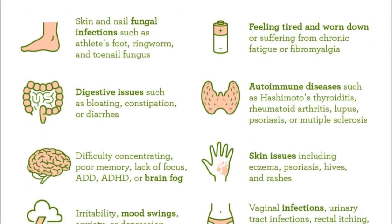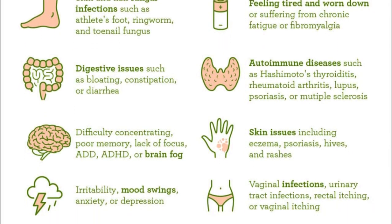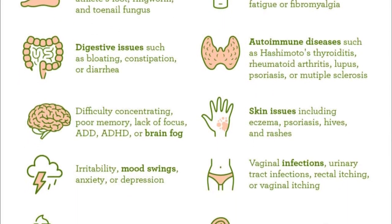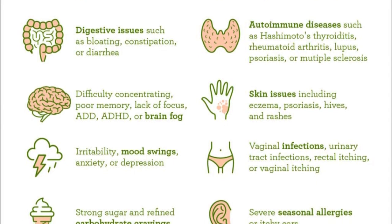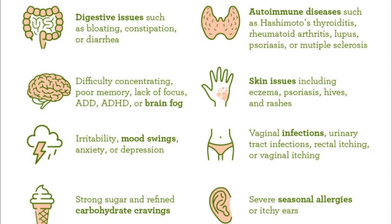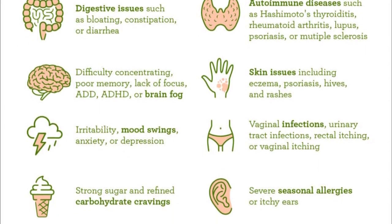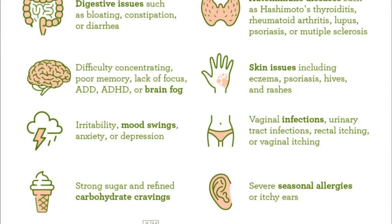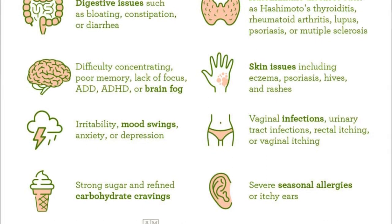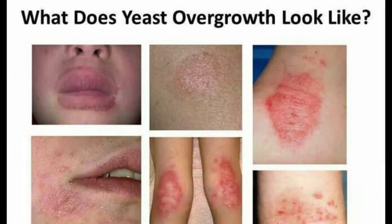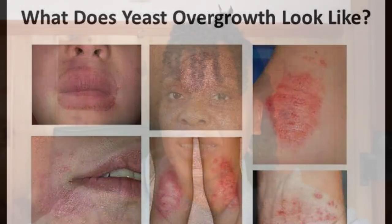Mood swings as well — depression, ADHD, brain fog — that can be a candida overgrowth. If you have strong sugar cravings, always craving carbohydrates and sugar, that could be a symptom. Skin issues like eczema and acne could also be a symptom of candida overgrowth. So it presents itself in so many ways.